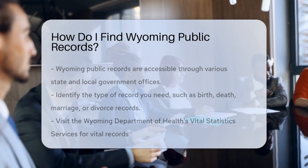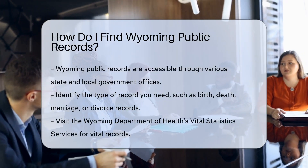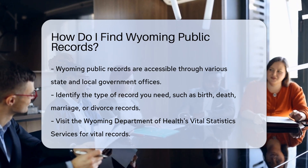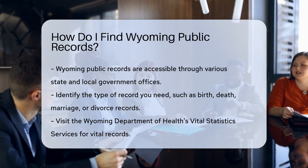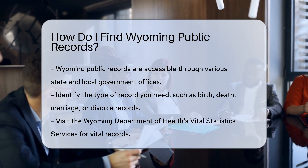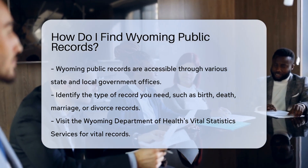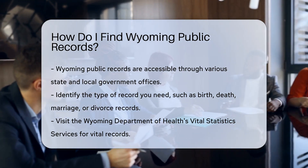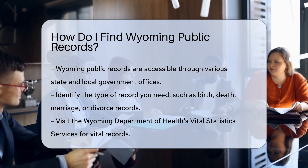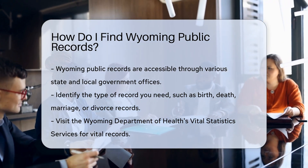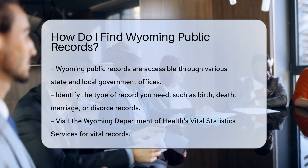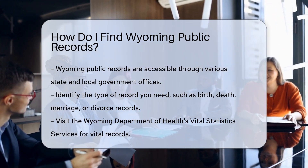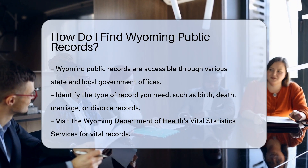Wyoming public records are accessible through various state and local government offices. To start, identify the type of record you need. Birth, death, marriage, and divorce records are vital records. For vital records, visit the Wyoming Department of Health's Vital Statistics Services. They maintain records of births and deaths from July 1909 to the present. Marriage and divorce records are available from May 1941 to the present.